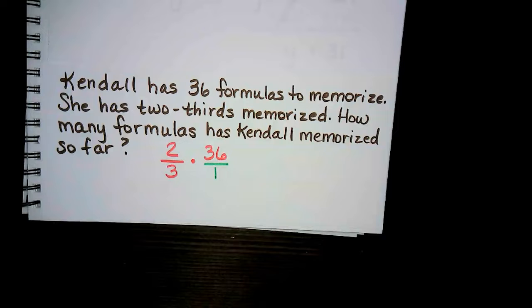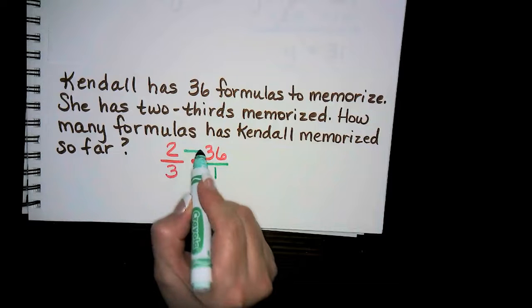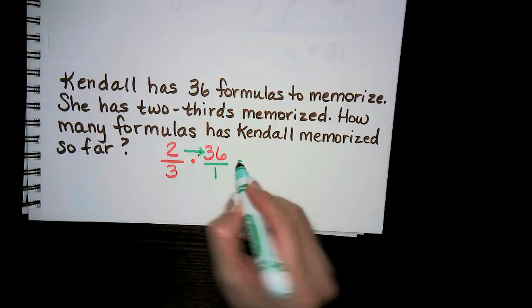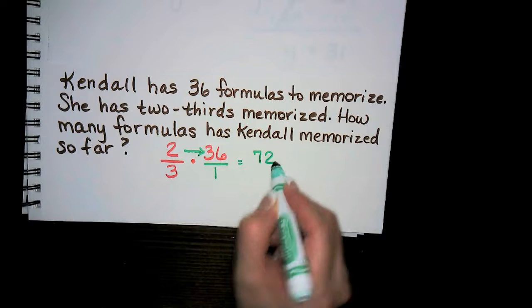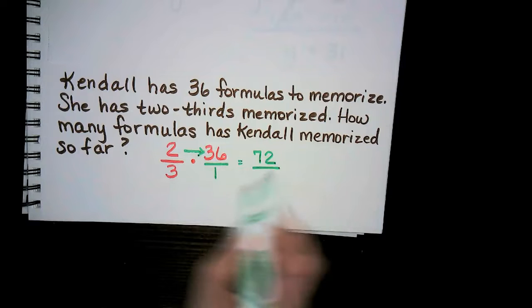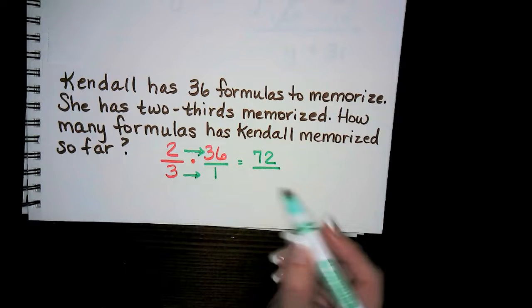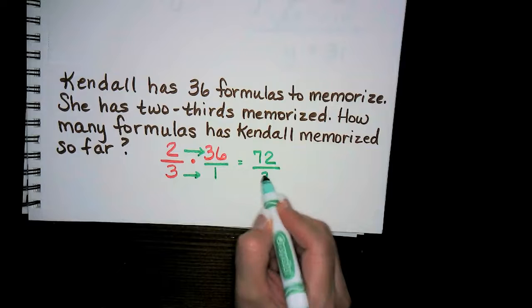This way it's going to make it easier to multiply across the top: two times 36 will give you 72, and then across the bottom: three times one will give you three.